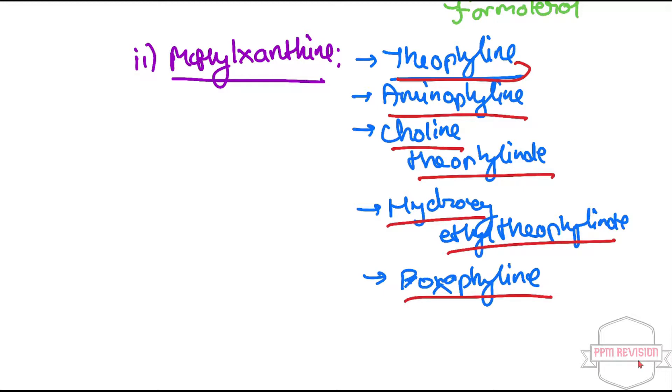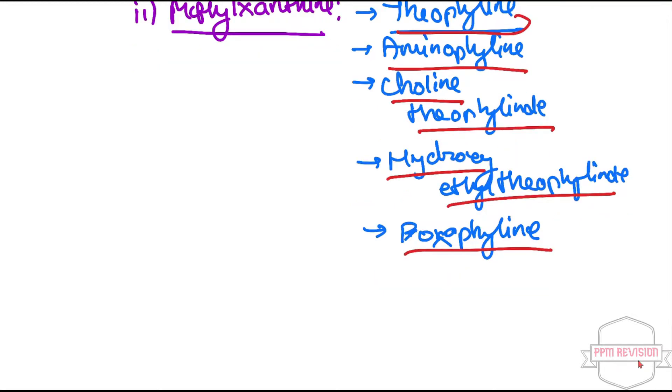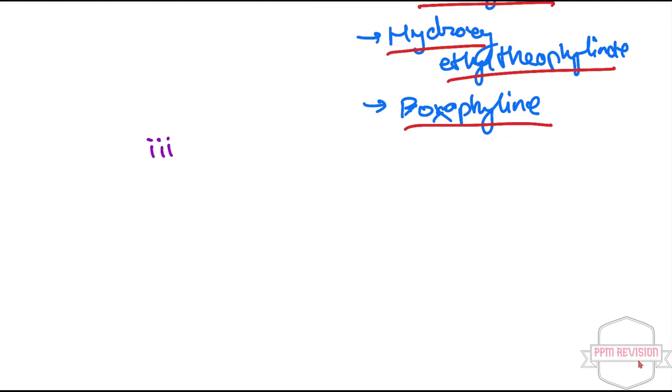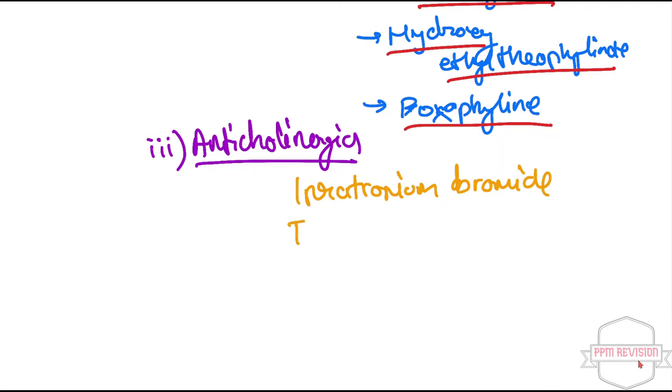Next category, there is anticholinergics. Under anticholinergics there is ipratropium bromide. Next there is also tiotropium bromide.